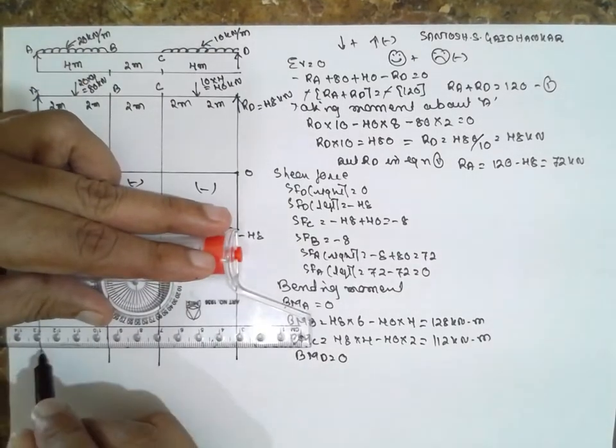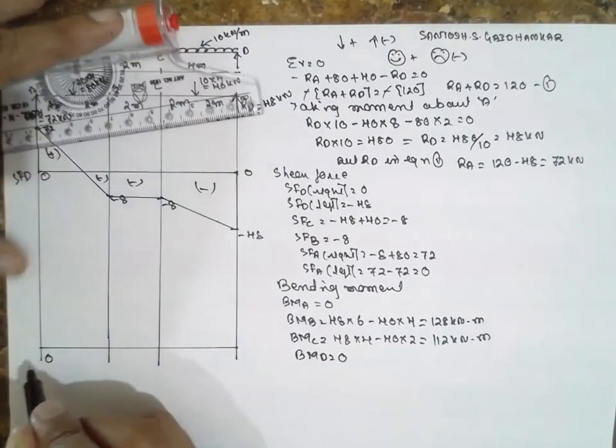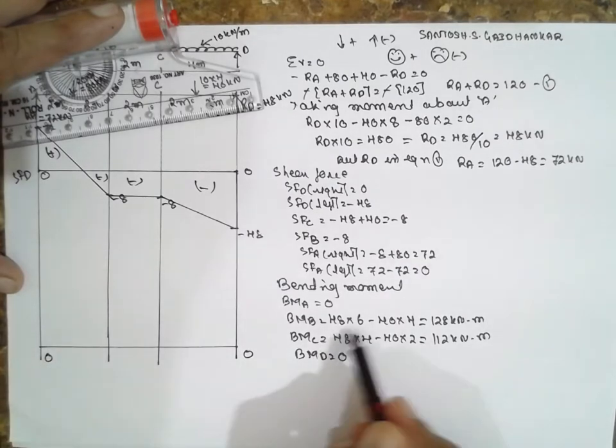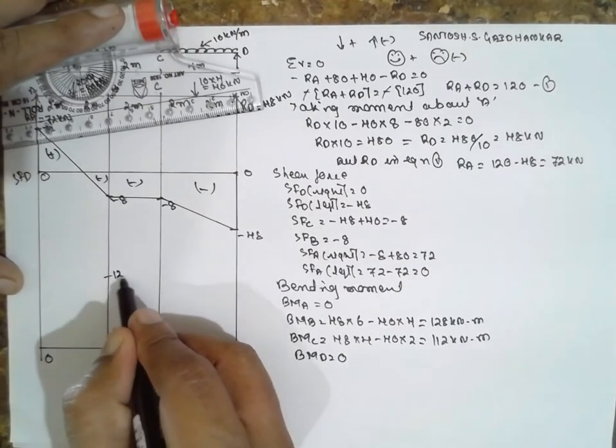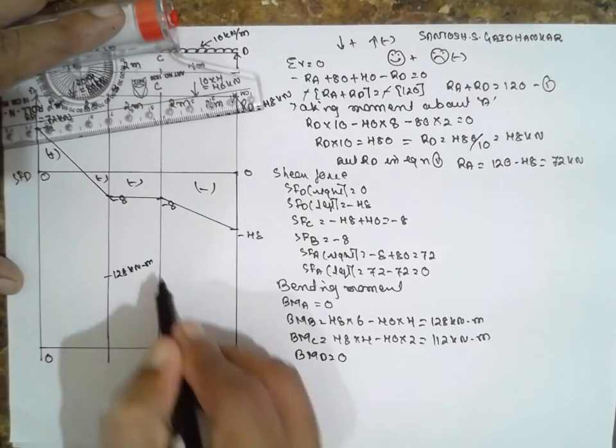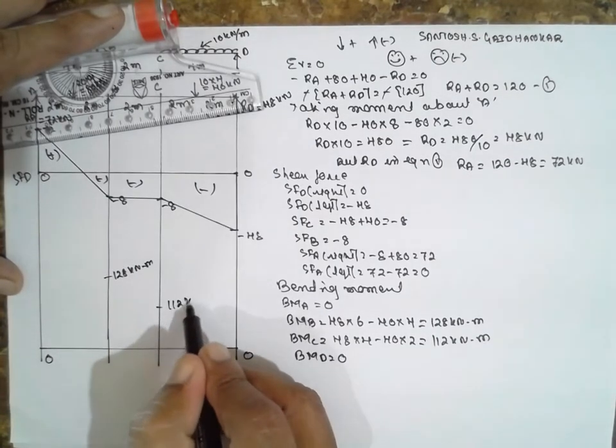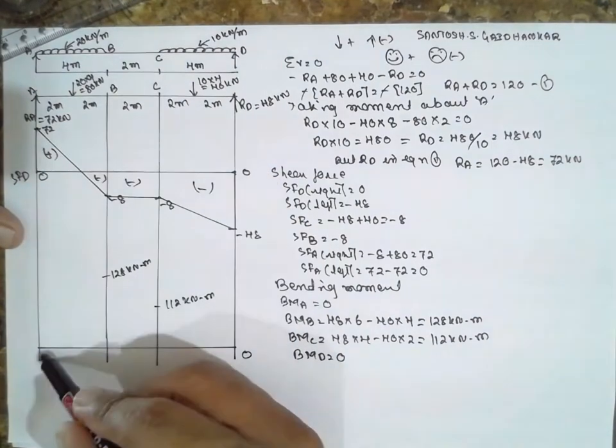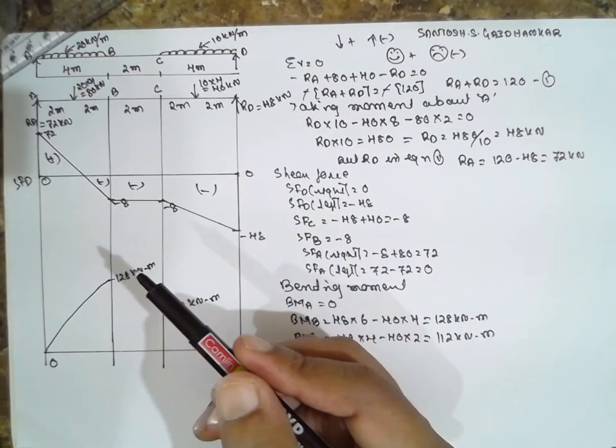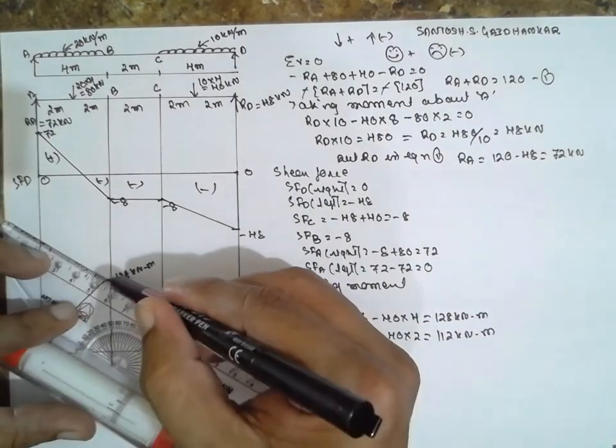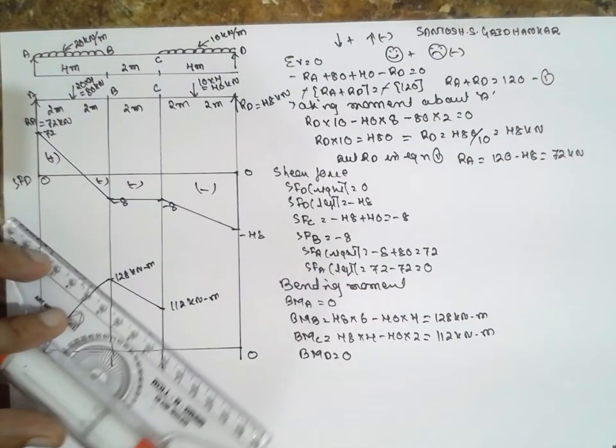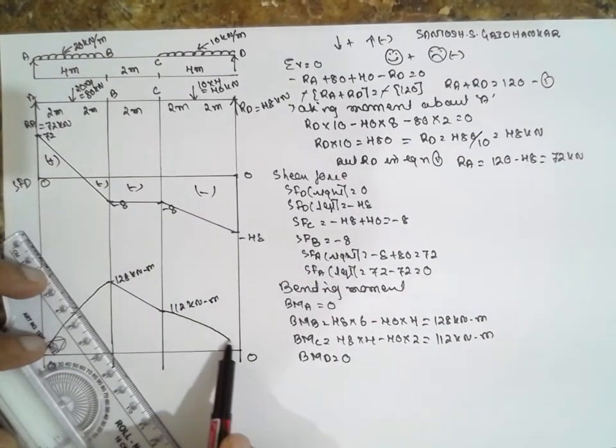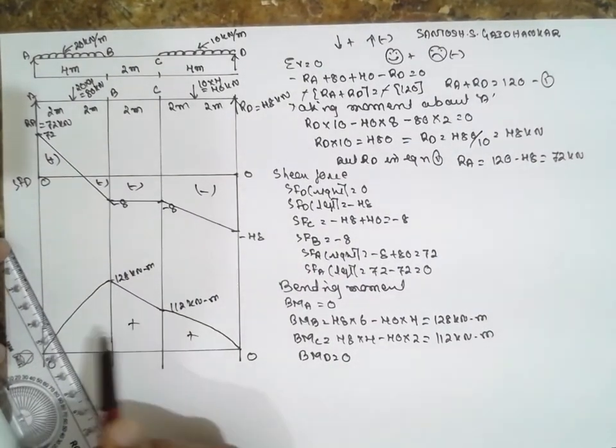Everything is positive here: 0 at A, 128 kNm at B. It is a parabola because there is a UDL here, straight line, again parabola, positive.